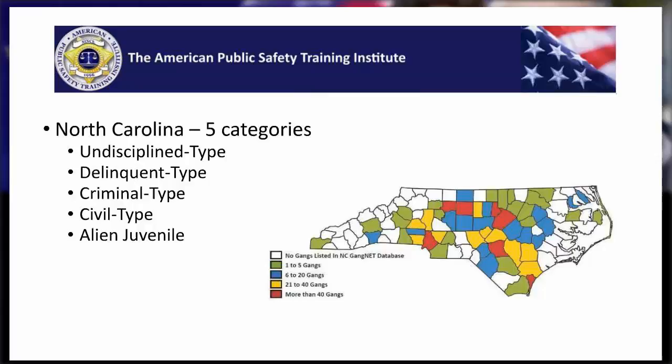Two, a delinquent type status. This would be a juvenile who committed a curfew, alcohol, tobacco, or maybe a motor vehicle offense — something that would not be a crime for adults, like buying tobacco under the age of 18, but in the case of a juvenile it would be a delinquency.